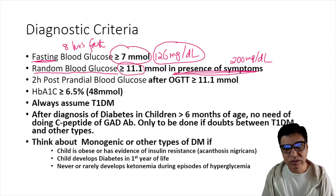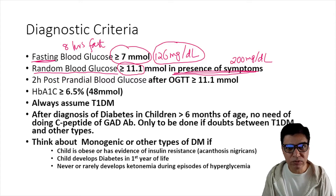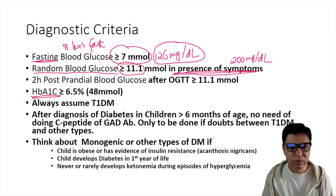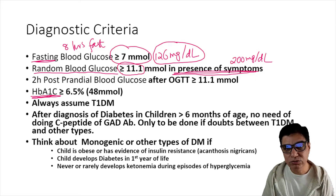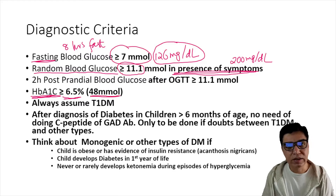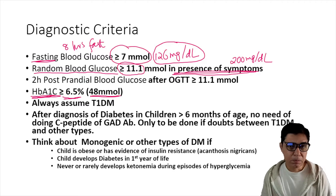There was controversy regarding HbA1c levels in diagnosing diabetes in children, but WHO now recommends that an HbA1c — glycosylated haemoglobin — gives a good picture of glycaemic control over the last two to three months. If HbA1c is 6.5% or greater, equivalent to 48 mmol/mol, the child would be classified as diabetic.